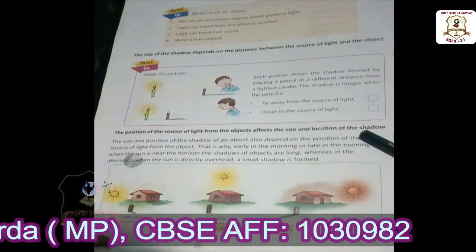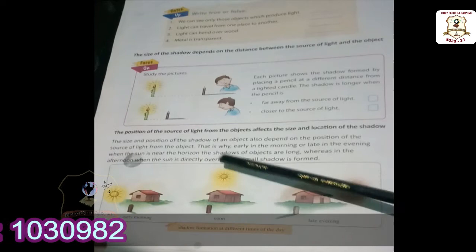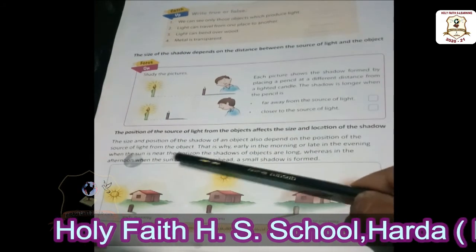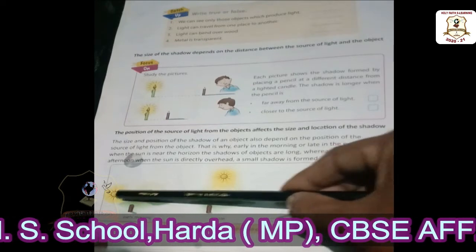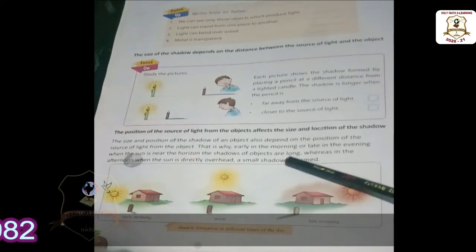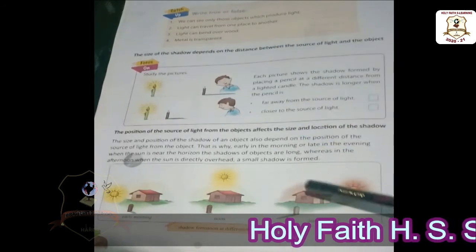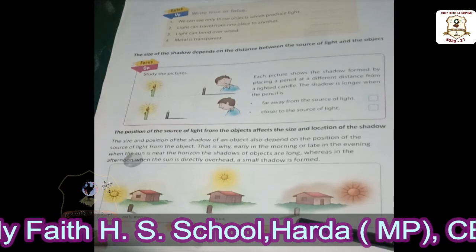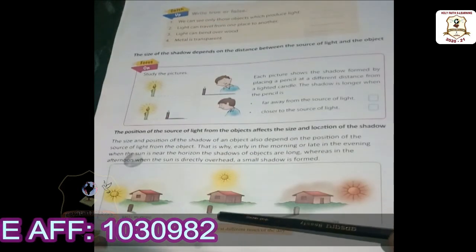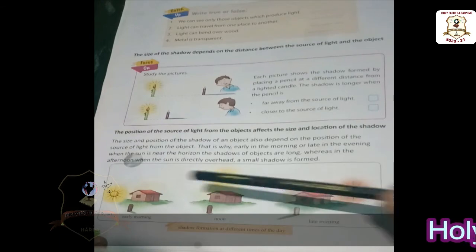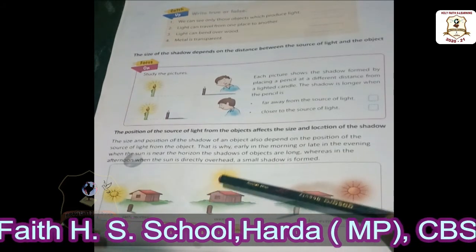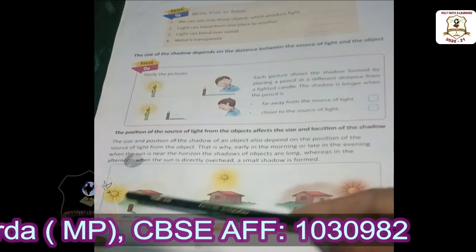The natural source of light is the Sun. The size and location of a shadow also depend on the position of the source of light from the object. That is why early in the morning or late in the evening, when the Sun is near the horizon, the shadows of objects are long. The shadow in the morning and evening is longer than the afternoon shadow.